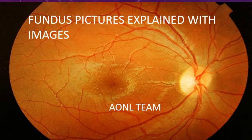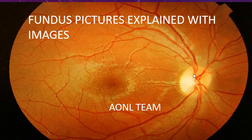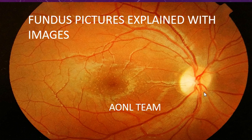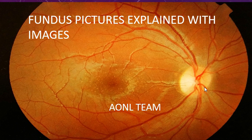Let us start with the examination of a normal fundus. This image is of a normal fundus of the right eye — you can see the macula on your left side and the disc on the right side. This is the optic disc, which represents the optic nerve head; from here the optic nerve continues to the brain. The margins of the optic disc on this image look normal. In cases of optic disc swelling or papilledema, the disc margin will be blurred.